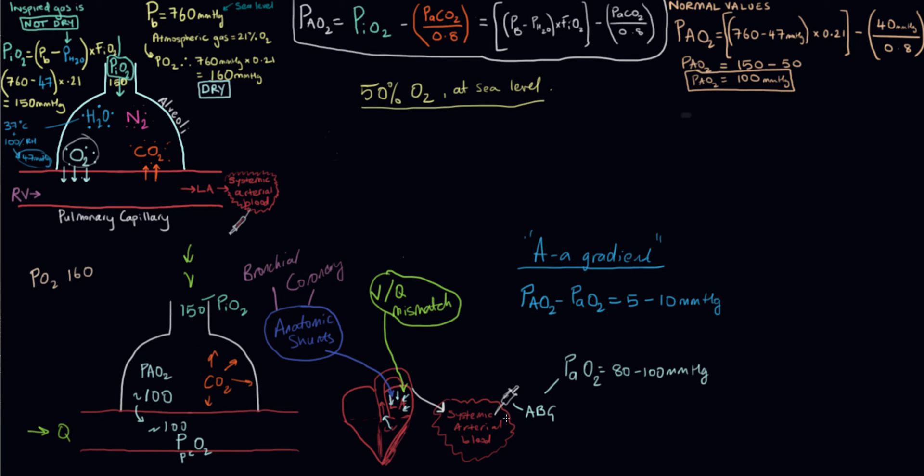We took an arterial blood gas, and that gave us a PaO2 of 50 millimeters of mercury and a PCO2 of 50 as well. What I want you to do is figure out what their AA gradient is. We'll use the alveolar air equation to figure out what their alveolar PO2 is, and then see what this difference is.